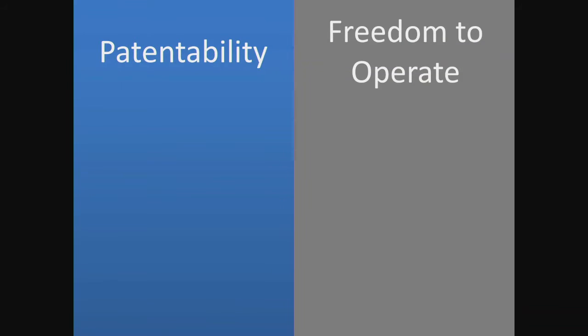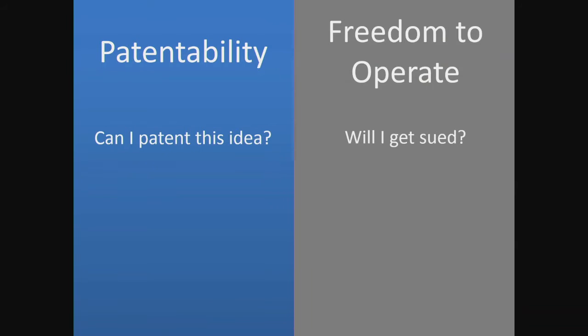So it's very important to think about the decisions, what's out there, and the financial impact that it can have. Most of you have an idea. When it comes to intellectual property, once you have an idea, the next step is you need to look at two different aspects: patentability — can I get a patent? — and then freedom to operate — will I get sued? Those are the two things you need to do once you have an idea.